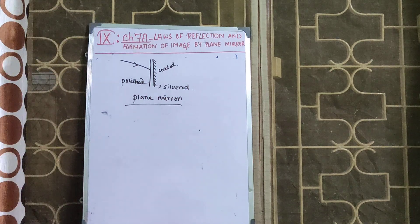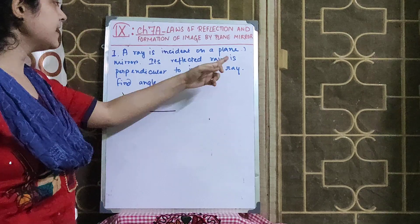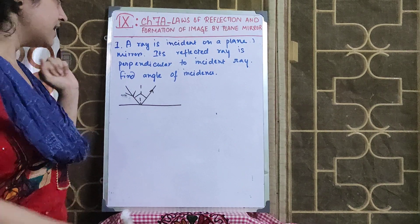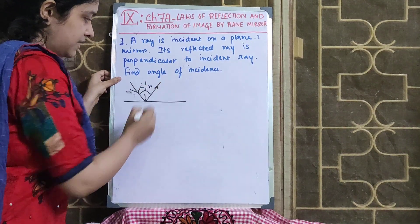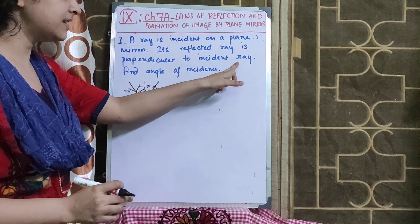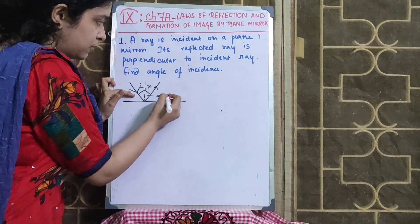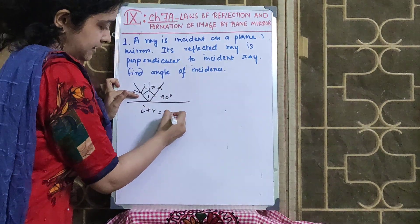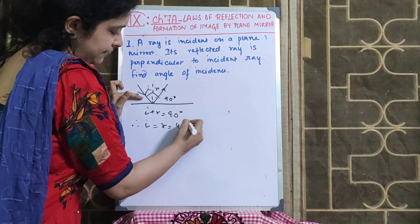A ray is incident on a plane mirror and its reflected ray is perpendicular to the incident ray. Find the angle of incidence. The angle between the incident ray and reflected ray is 90°. Since I equals R, we have I plus R equals 90°, therefore I equals R equals 45°.